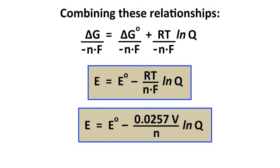And if we are dealing with the normal temperature of 25 degrees Celsius, then R times T over F works out to be 0.0257 volts. And so at 25 degrees Celsius, this equation reduces to E = E° - 0.0257 volts over number of moles transferred times ln Q.